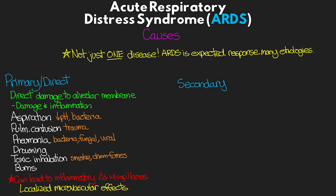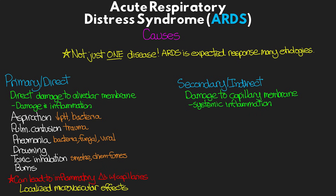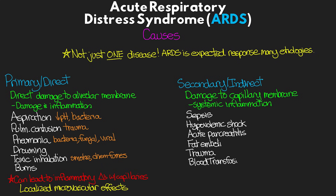Secondary or indirect causes are primarily mediated by damage to the capillary membrane through systemic inflammation. The systemic inflammation also leads to direct inflammation and damage of the capillaries, which can spread into the alveolus. Secondary causes include sepsis, hypovolemic shock, acute pancreatitis, fat emboli, trauma, blood transfusion (especially massive transfusion leading to TRALI), and disseminated intravascular coagulopathy (DIC).